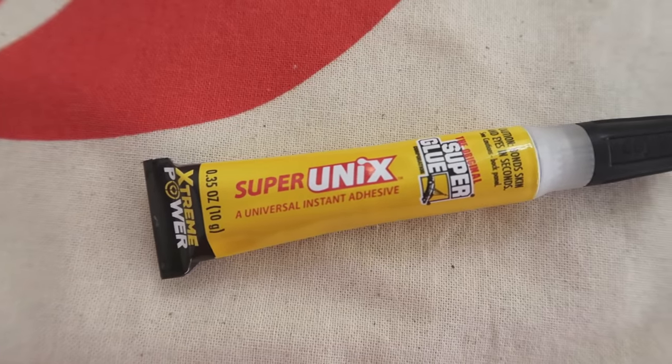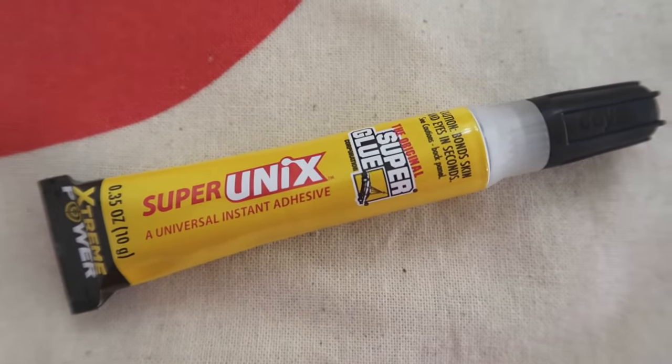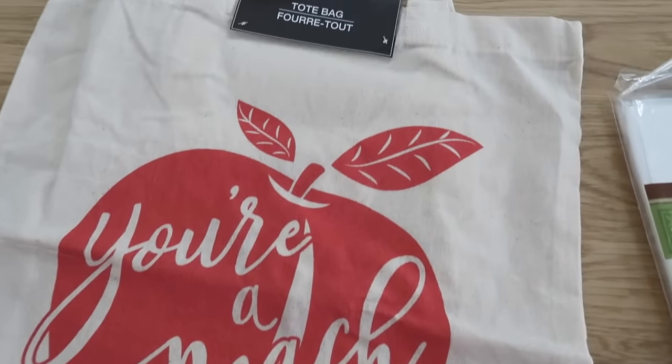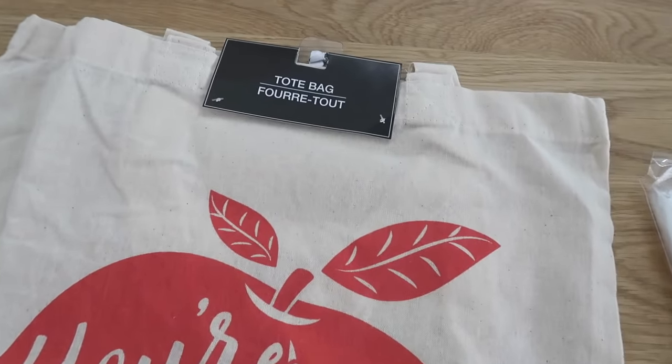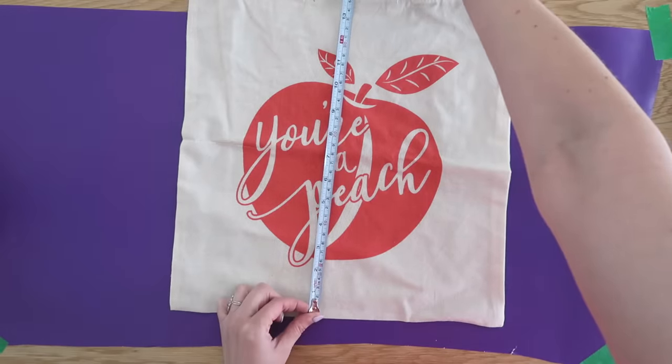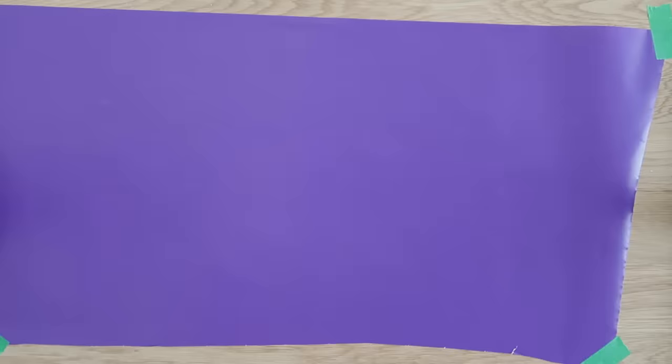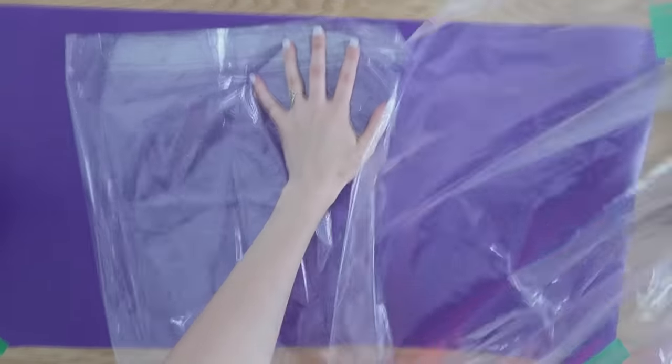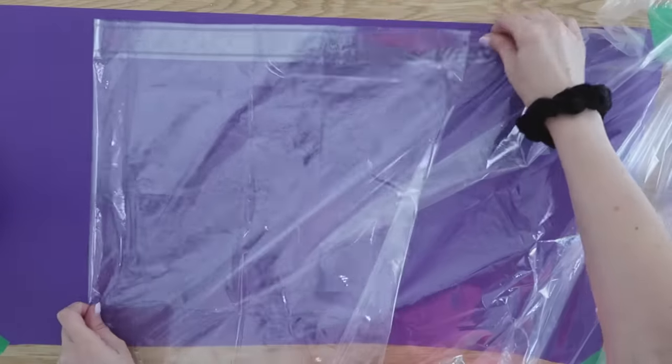I want to show you our first project featuring the Super Unx and a tote bag. So this is a Dollar Tree canvas tote bag, but you can use this idea for any type of tote bag you might already have. What I'm doing here is just measuring it first, kind of doing it a little bit smaller than the actual size of it because we're going to be making a liner to go inside of our tote bag.